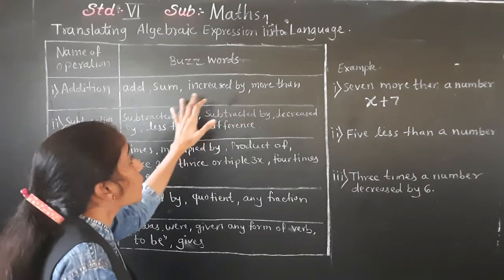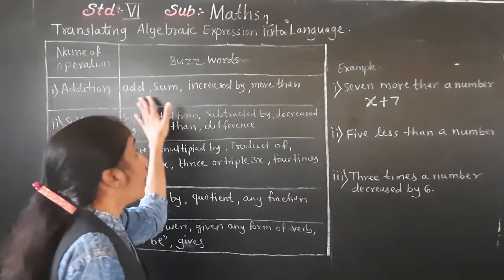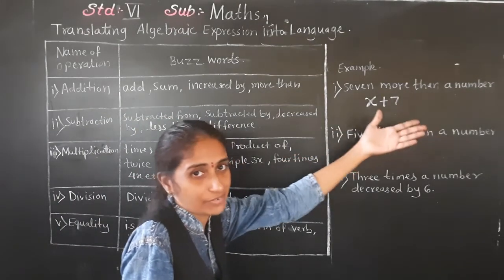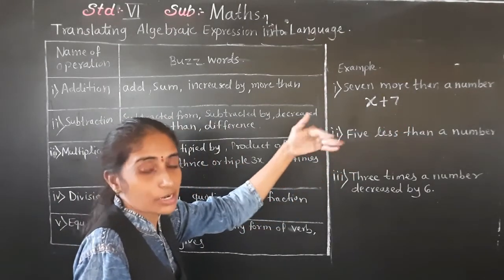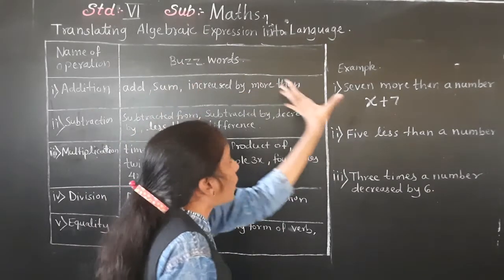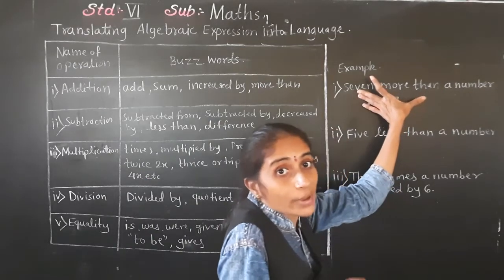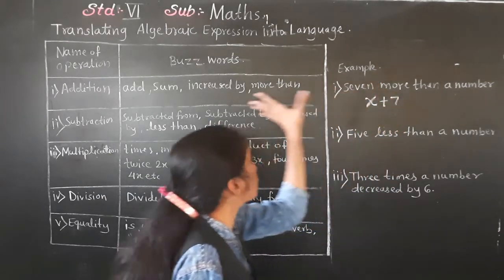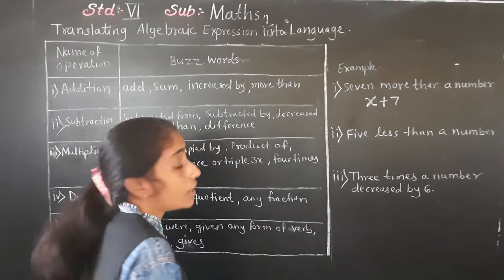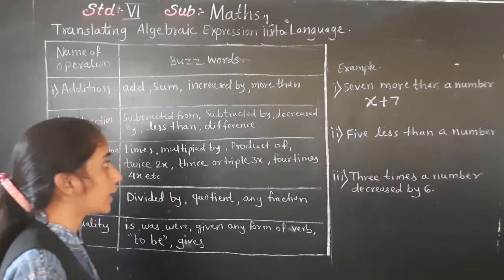It may also come as: sum of x and seven, or addition of a number and seven. All these words are used for addition. If any of these words appear, you know to use addition and can form the expression accordingly.